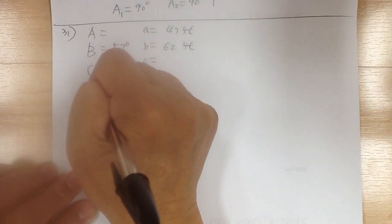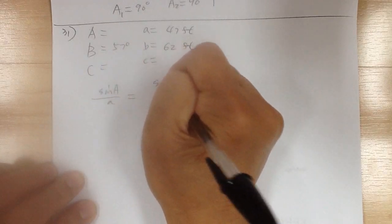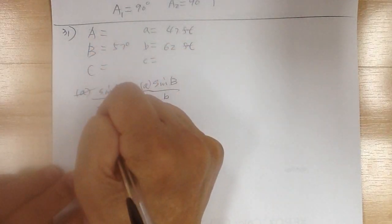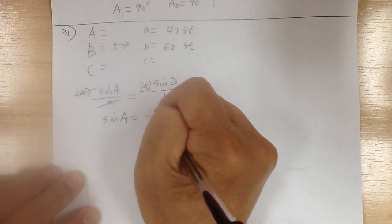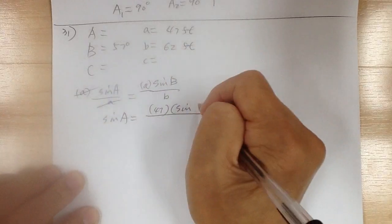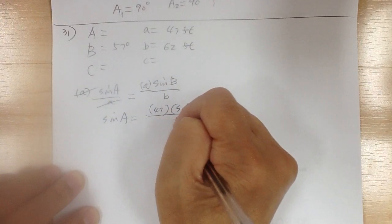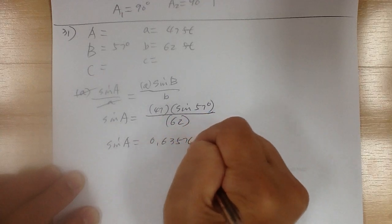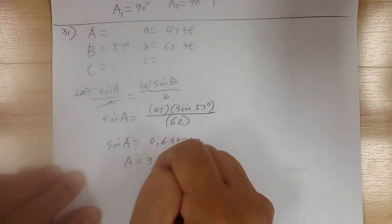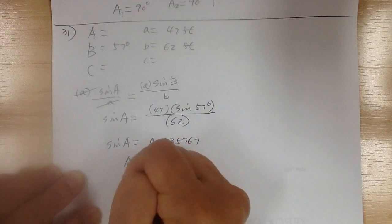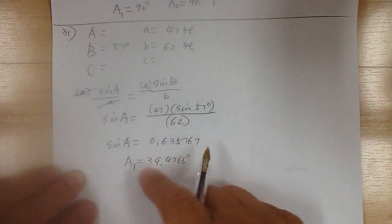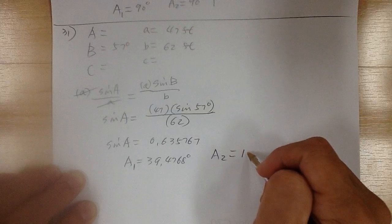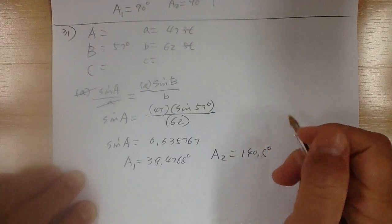Let's look for angle A. So sine A over a equals sine B over b. Multiply by a on both sides to cancel out. So sine A equals 47 times sine of 57 degrees over b, which is 62. So sine A equals 0.635767, and angle A equals 39.4768 degrees. Again, whenever you use the law of sines to find an angle, you have to get the second possibility. So A2 is 180 minus that, which gives you about 140.5 degrees — and this is no good.